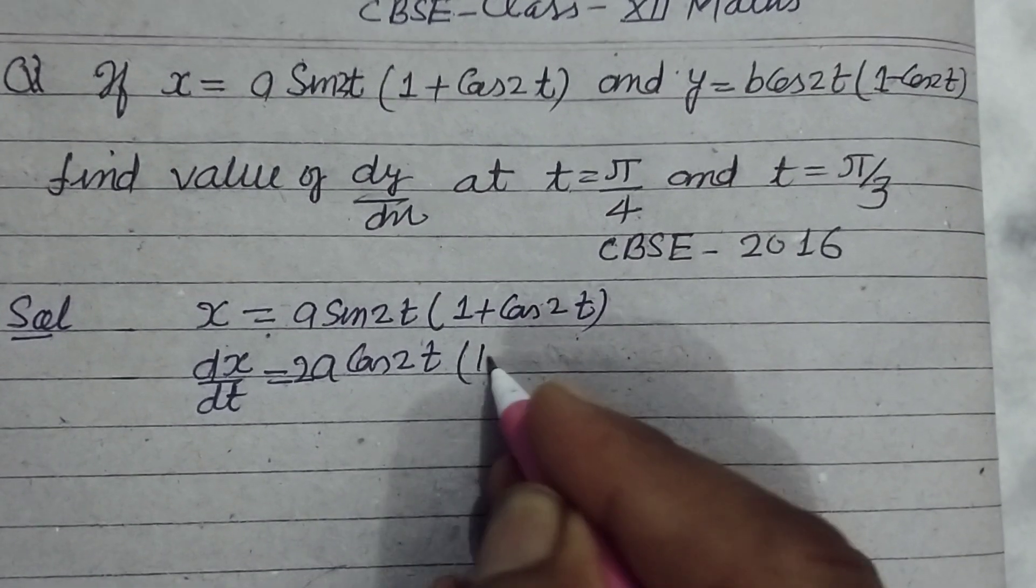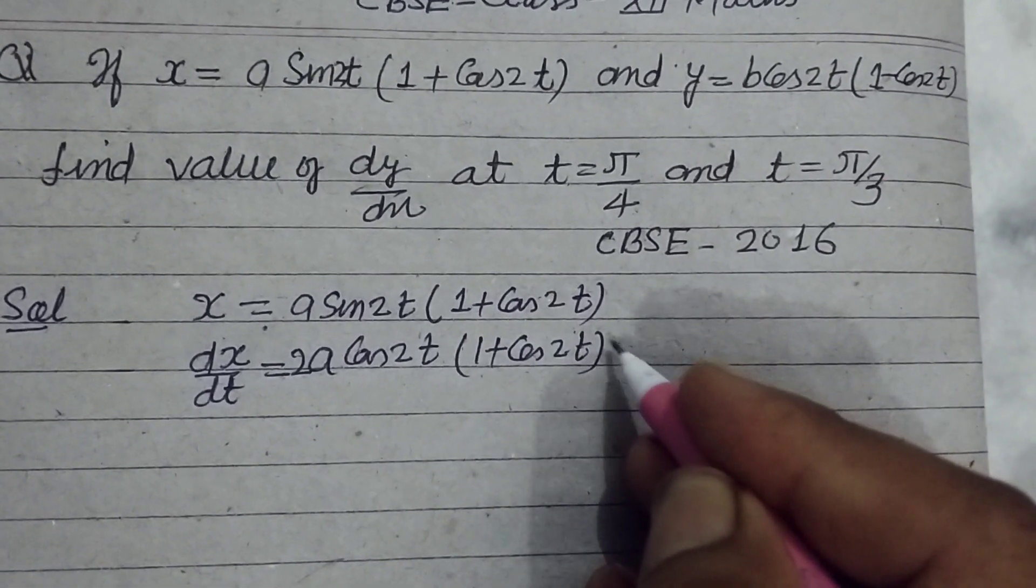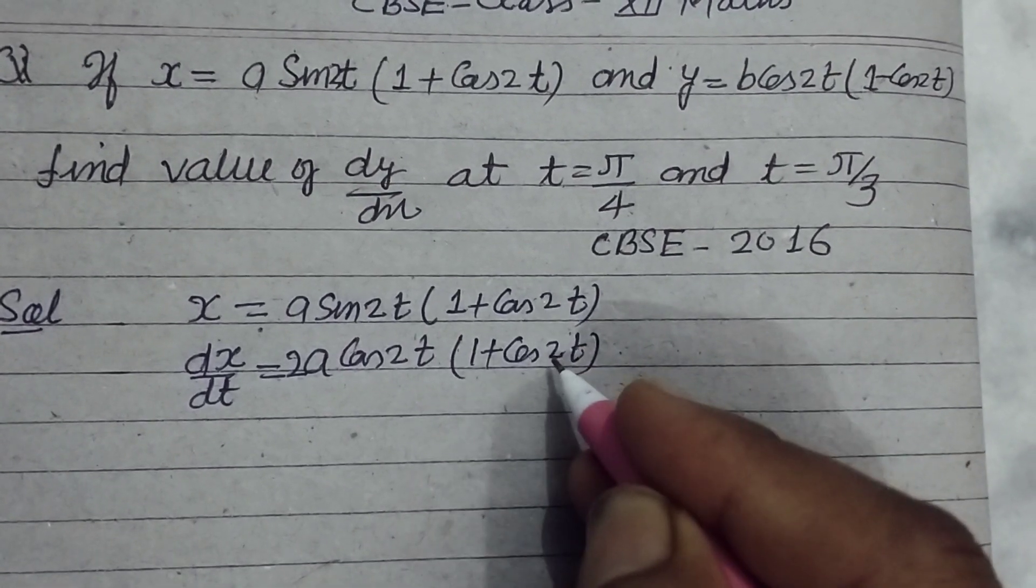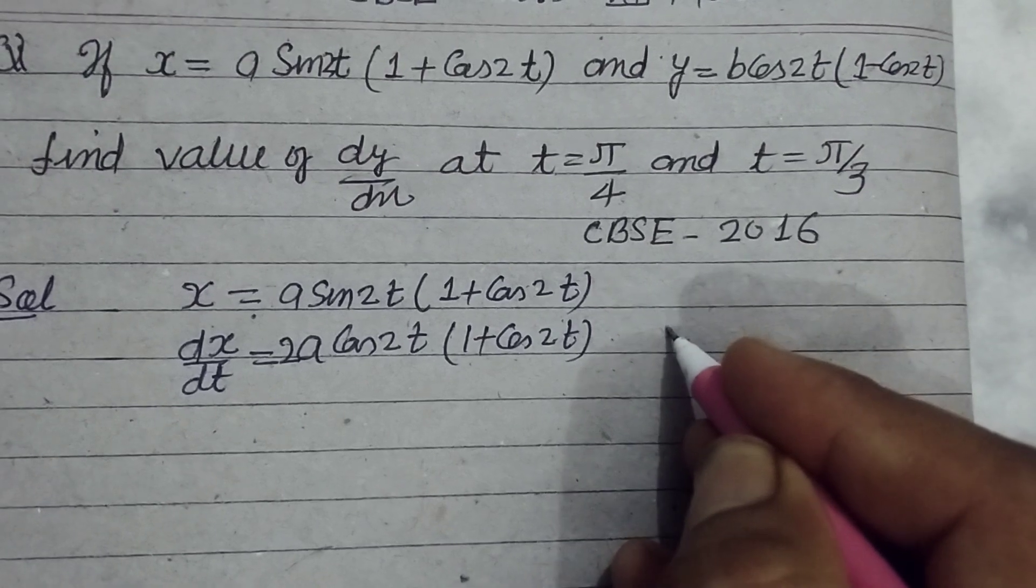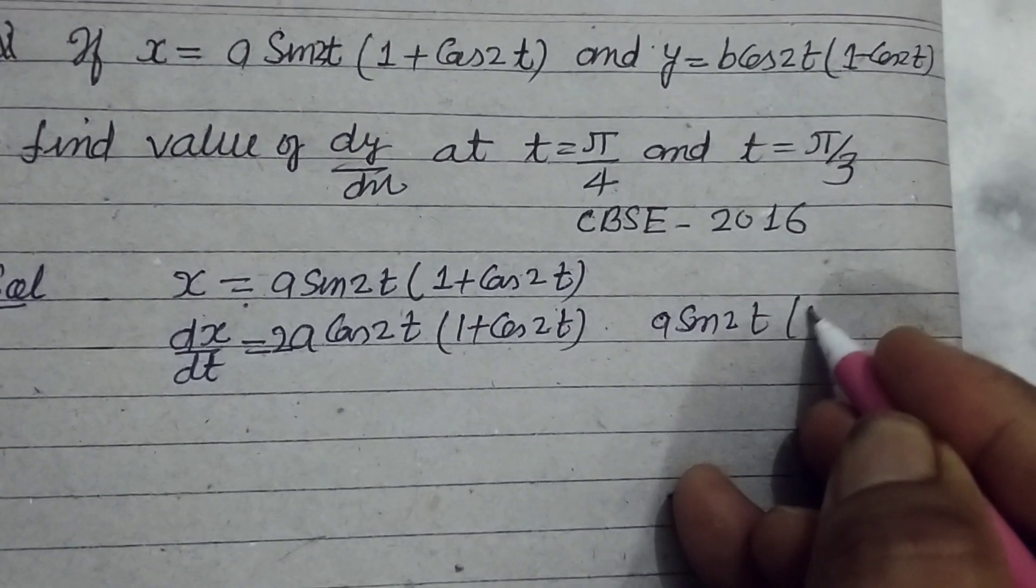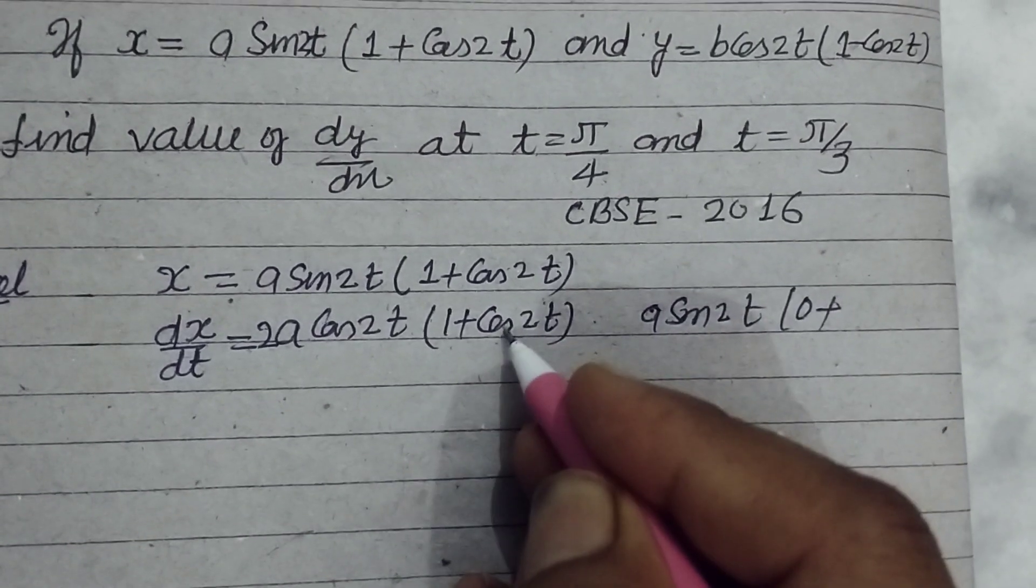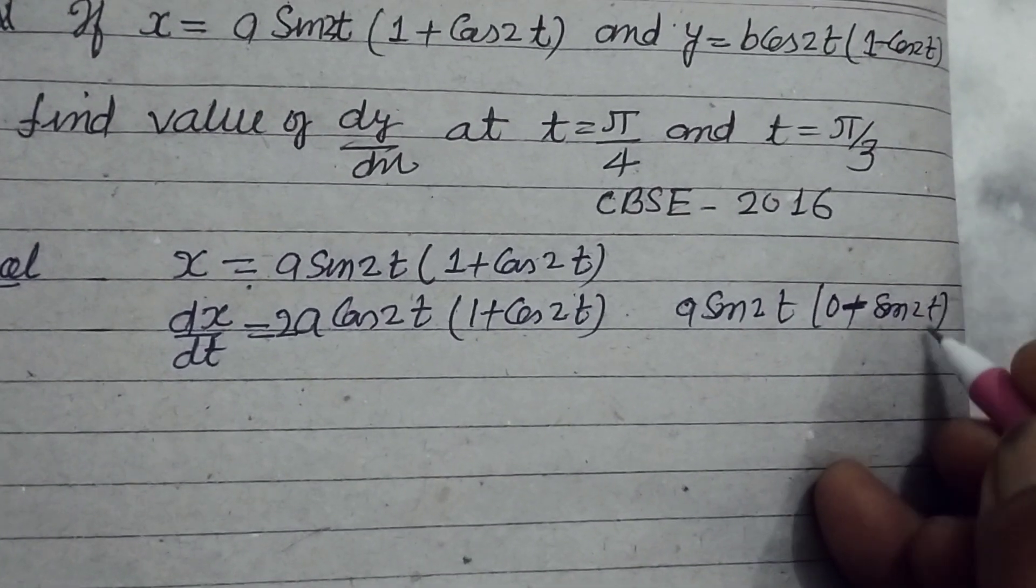And (1 + cos 2t) remains constant. Now we take the differentiation of (1 + cos 2t) and a sin 2t remains constant. So a sin 2t times (cos 2t gives -sin 2t, and of 2t is 2).